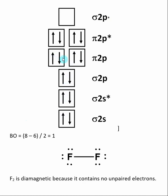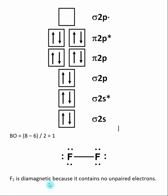After adding all 14 valence electrons, we calculate the bond order. There are 8 electrons in bonding molecular orbitals and 6 electrons in antibonding molecular orbitals. Taking 8 minus 6 and dividing by 2 gives an overall bond order for F2 of 1. This matches the Lewis structure — there is a single bond between the two fluorines in F2. F2 would also be diamagnetic because there are no unpaired electrons in the molecular orbital diagram.